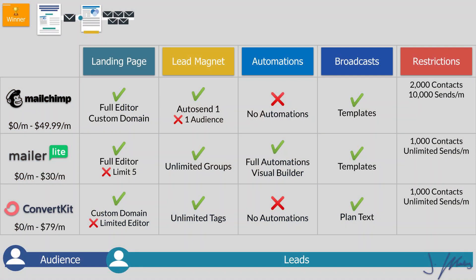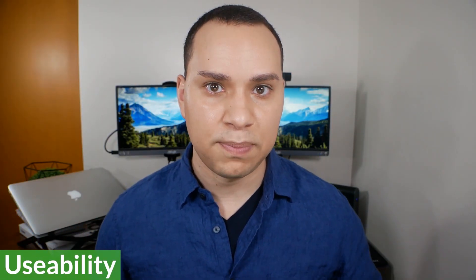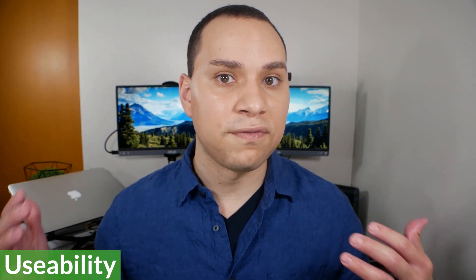That does it for the features — what you can and can't do. Now let's look at the restrictions of these free plans and how quickly you'll have to move from free to paid. MailChimp allows for 2,000 contacts and up to 10,000 email sends per month. MailerLite allows 1,000 contacts but unlimited email sends, which makes sense since you can set up automations and will be sending more emails to those contacts. ConvertKit also gives you 1,000 contacts with unlimited email sends.